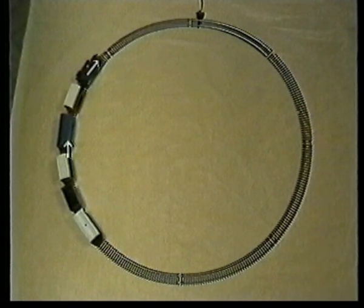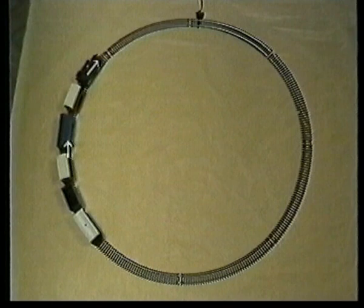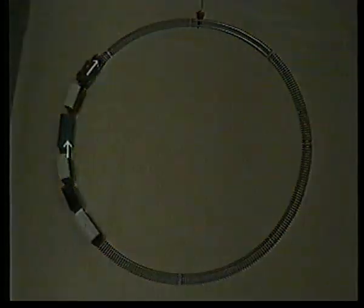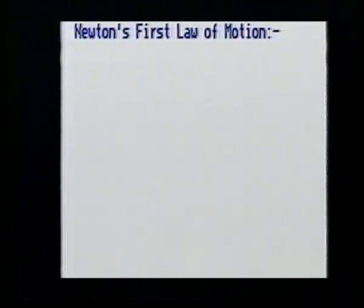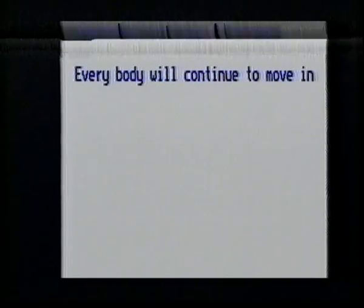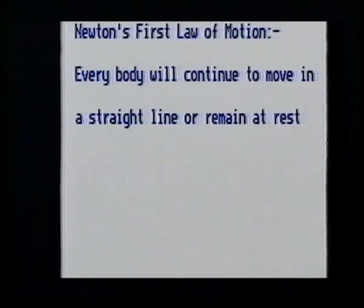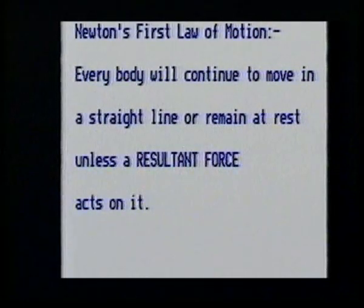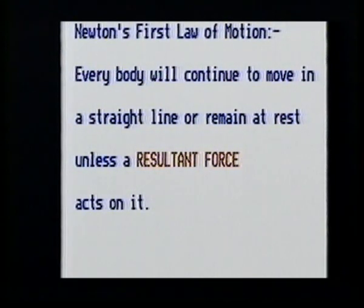But what caused the train to change direction? The answer to that question is provided by Newton's first law of motion. Every body will continue to move in a straight line or remain at rest unless a resultant force acts upon it. In the case of the train, the resultant force is caused by the reaction of the track on the wheels.